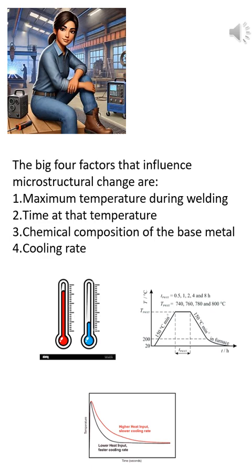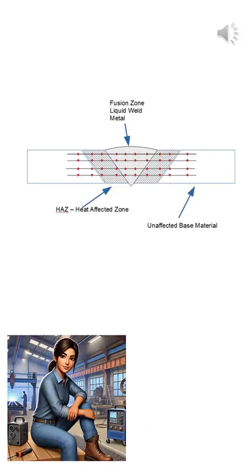More heat input or slow cooling equals bigger grain size - bad news. Faster cooling usually gives finer grains, better for toughness. But go too fast and you risk hard, brittle structures. Controlling heat input, preheat, interpass temperature, and cooling rate - all of that isn't just procedure. It's science. And understanding how these zones behave gives you the power to produce better, stronger welds.